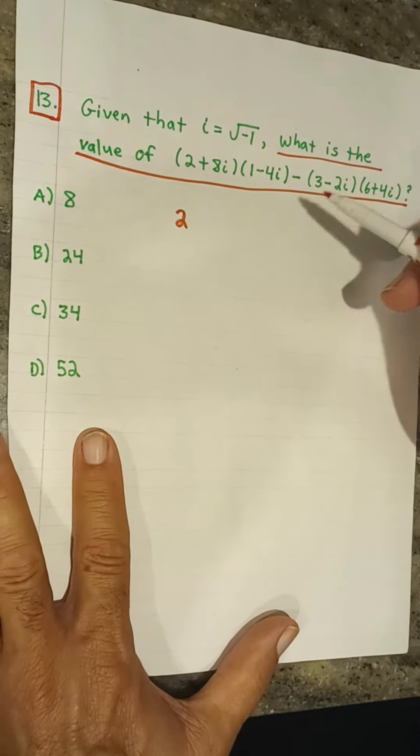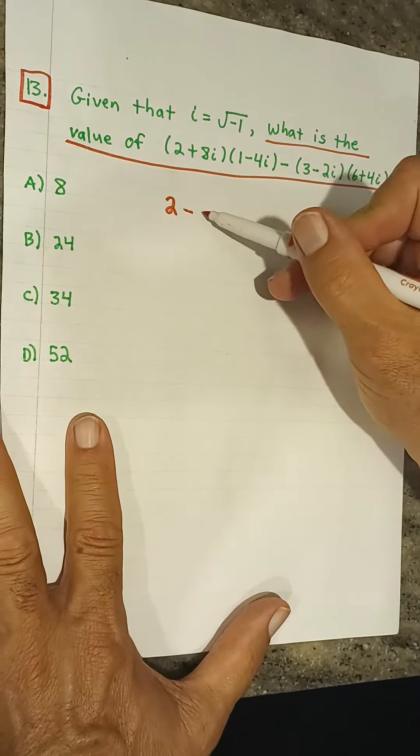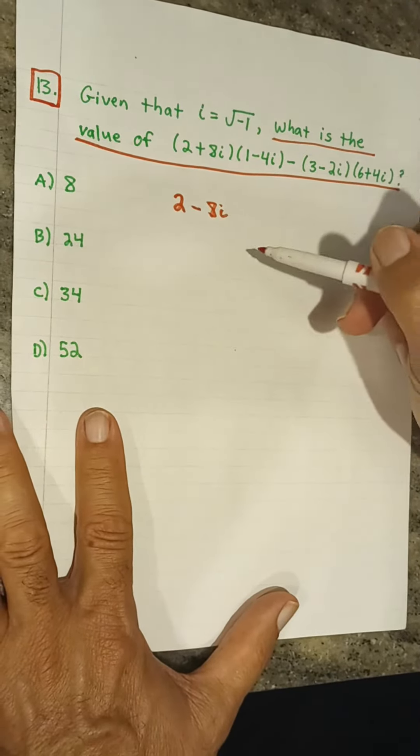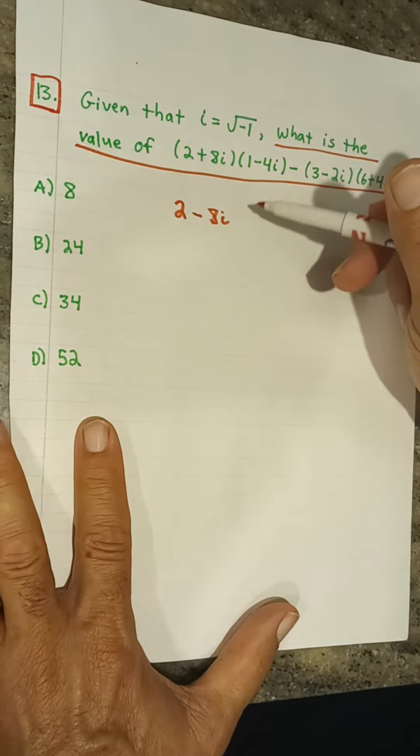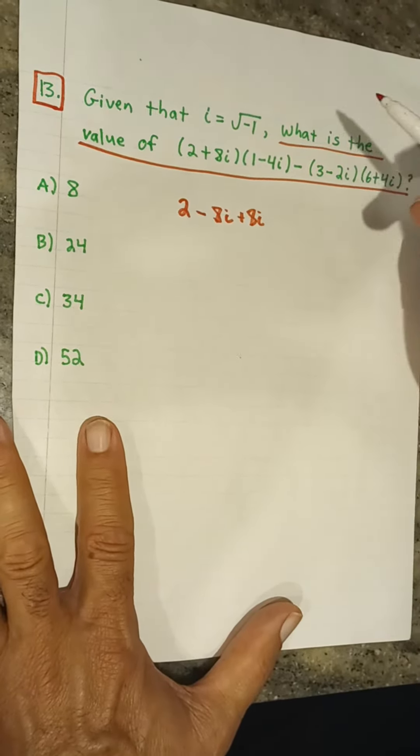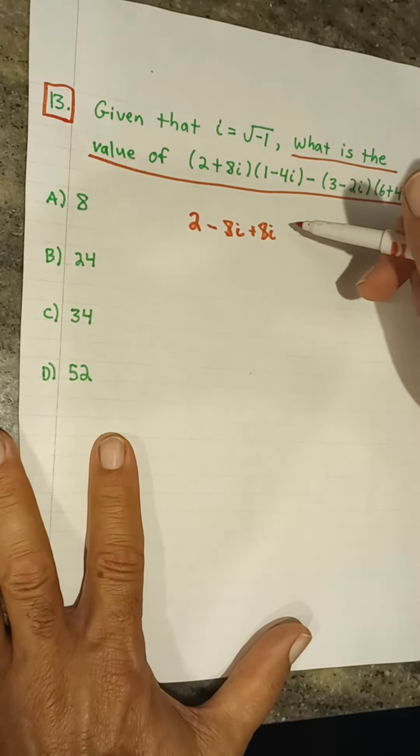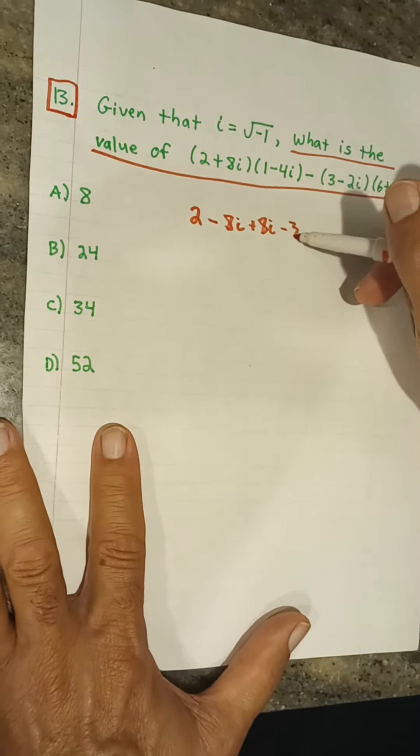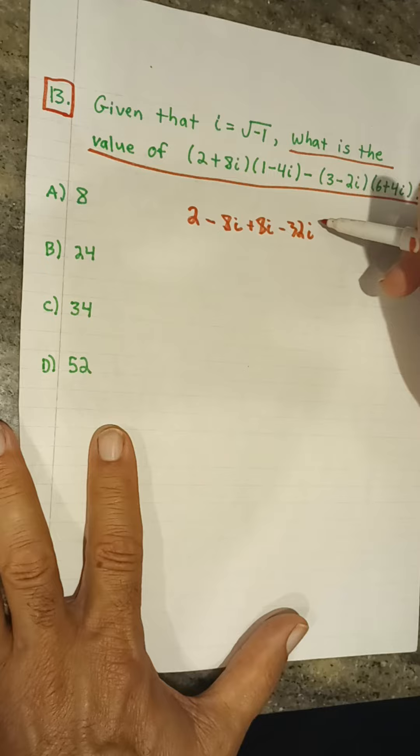Outside 2 times negative 4i is negative 8i. Inside 8i times 1 is positive 8i. And last 8i times negative 4i is negative 32i squared.